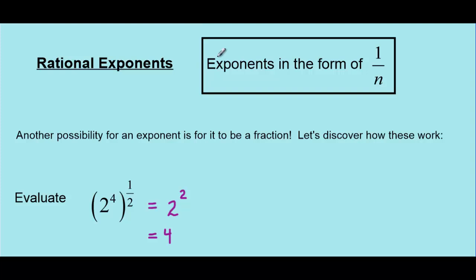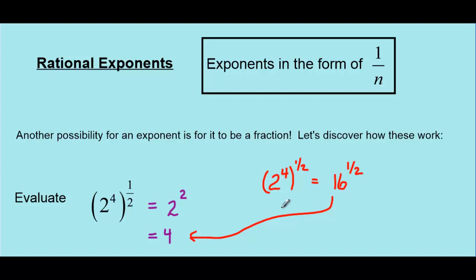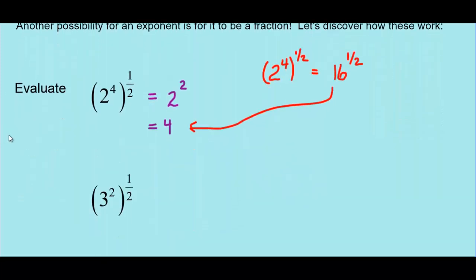If we just look at the bracket by itself: 2 to the exponent 4 equals 16. So really what we're saying is 16 to the exponent 1/2 equals 4. Maybe we don't have enough information yet to figure out how 16 to the exponent 1/2 gets to be 4 — did we subtract 12? Did we divide by 4? So let's look at another example and see if we can piece together what this exponent 1/2 means.